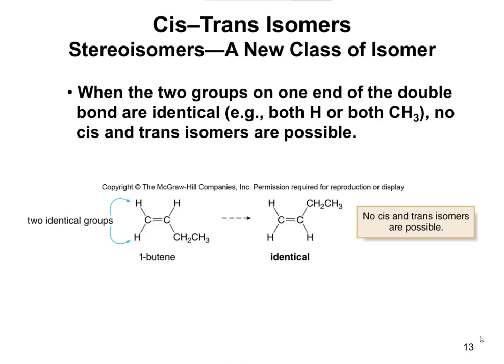That's the example here. In 1-butene, those Hs are identical groups, so no cis and trans isomers are possible. The only difference between these two structures is that the CH2CH3 is down on one and up on the other. But you could imagine taking that whole molecule and flipping it horizontally, and nothing changes — because CH2CH3 is still in relation to an H, and it's in relation to an H. So you really look at what it's next to, and in both cases it's next to an H, so those are treated as identical molecules.